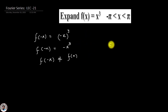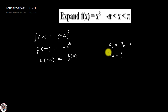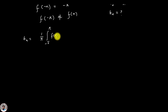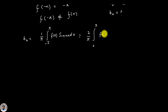For an odd function, a₀ and aₙ are both equal to 0. So in this case we only need to find the value of bₙ. The formula for bₙ is: bₙ = (1/π) ∫₋π^π f(x) sin(nx) dx, or equivalently (2/π) ∫₀^π f(x) sin(nx) dx.